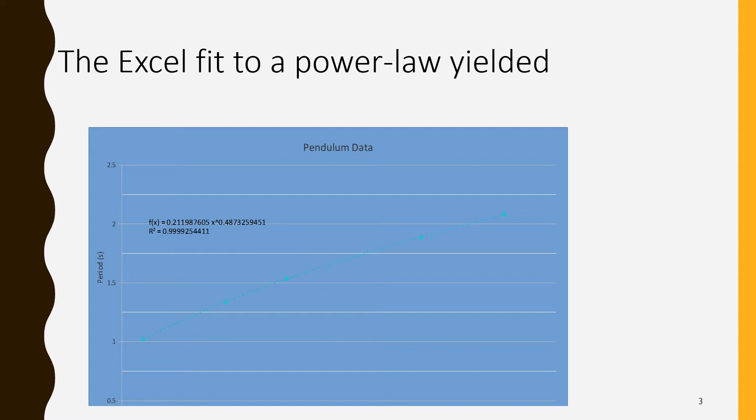That's what gave us the graph shown here. We see there is a power law form with a power of 0.487 close to the theoretical value of a half. There's a coefficient out front of 0.21198.